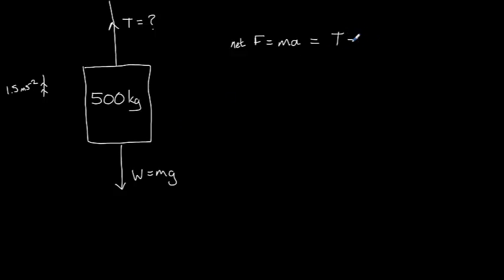and take away the weight, which is mg. And now we can rearrange this to get tension. So tension is equal to ma plus mg, which if we'd like to we can simplify to m multiplied by a plus g.